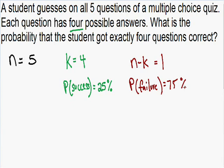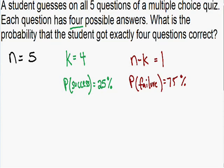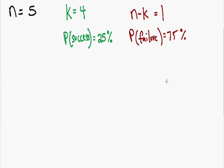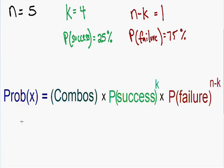Now we have everything we need to plug into our formula. The formula for binomial distribution looks much worse than it really is. Basically, the probability of any event x is equal to the total number of combinations multiplied by the probability of success raised to the power K — where K is the total number of successes — all multiplied by the probability of failure raised to the power N minus K, where N minus K is the total number of failures.